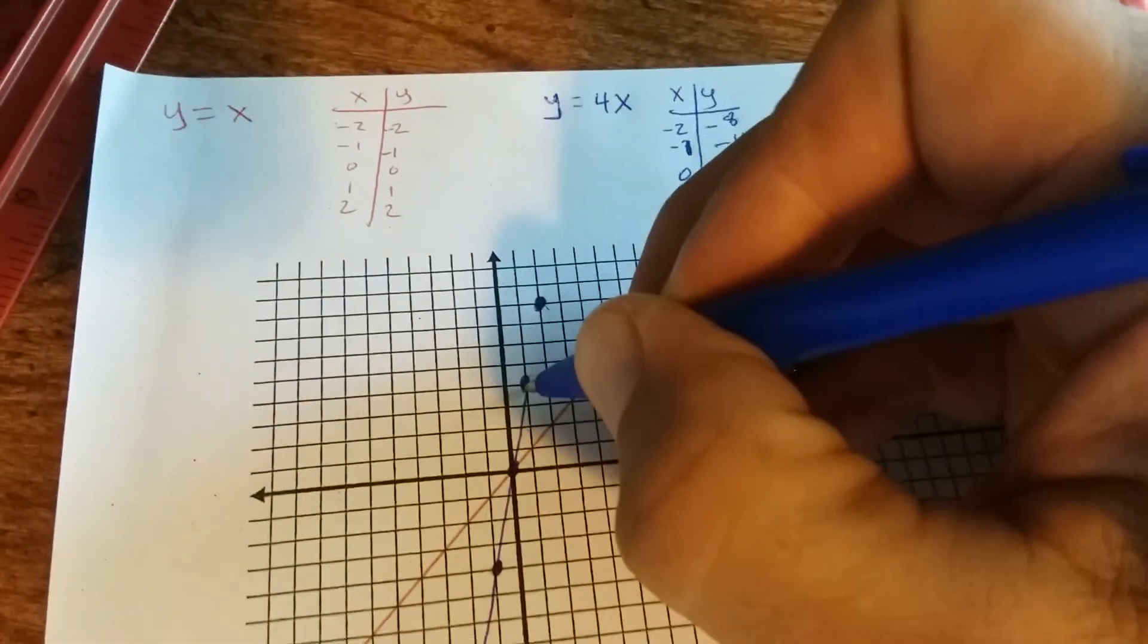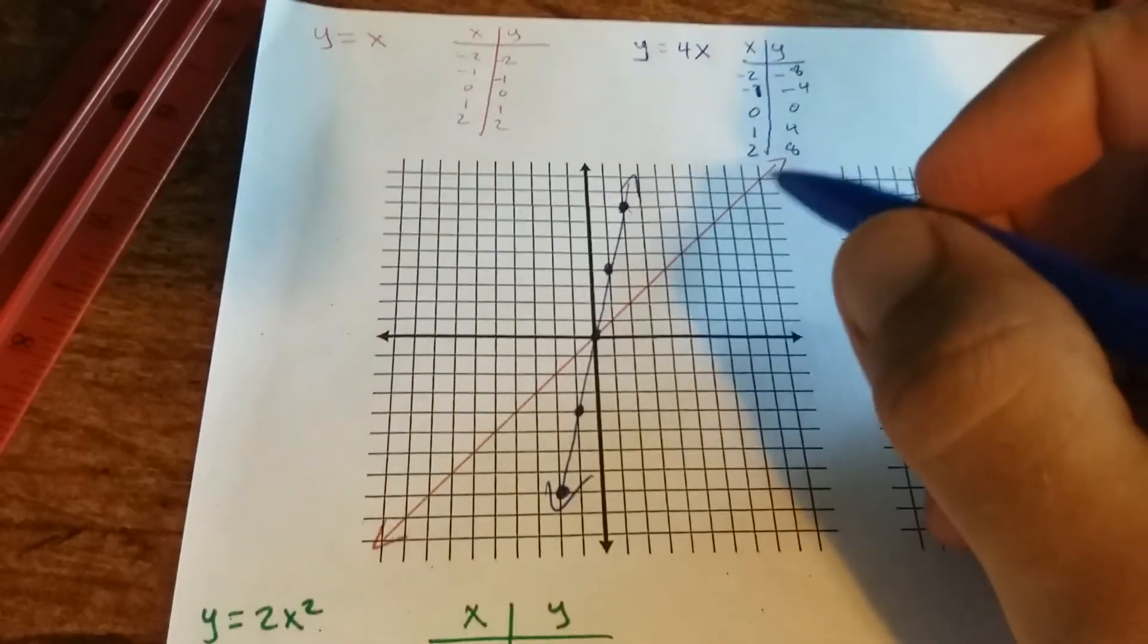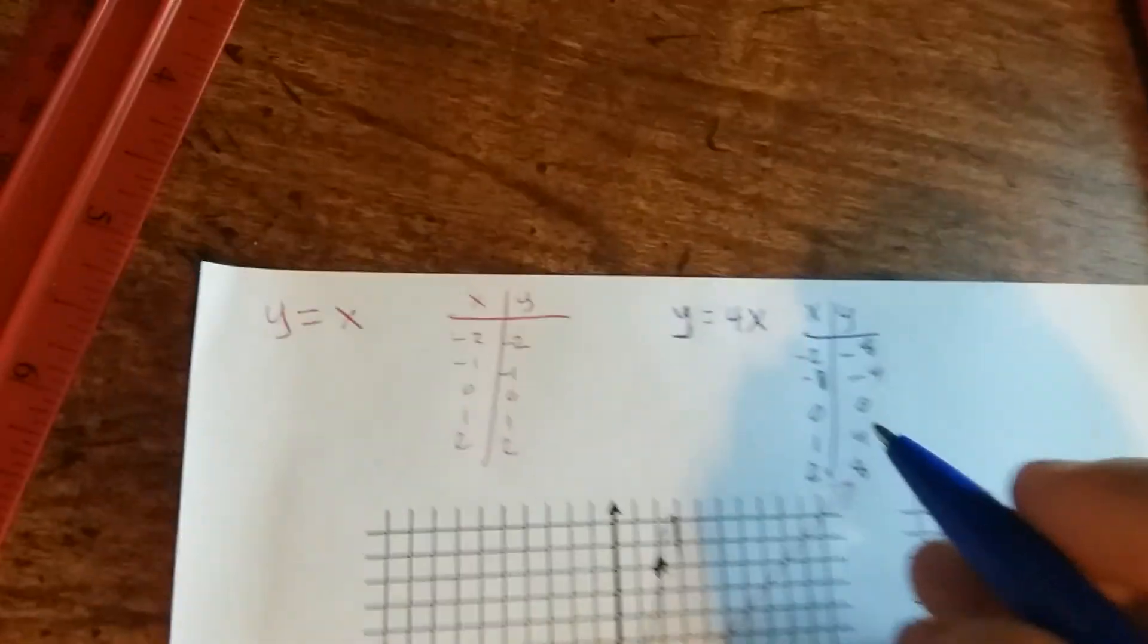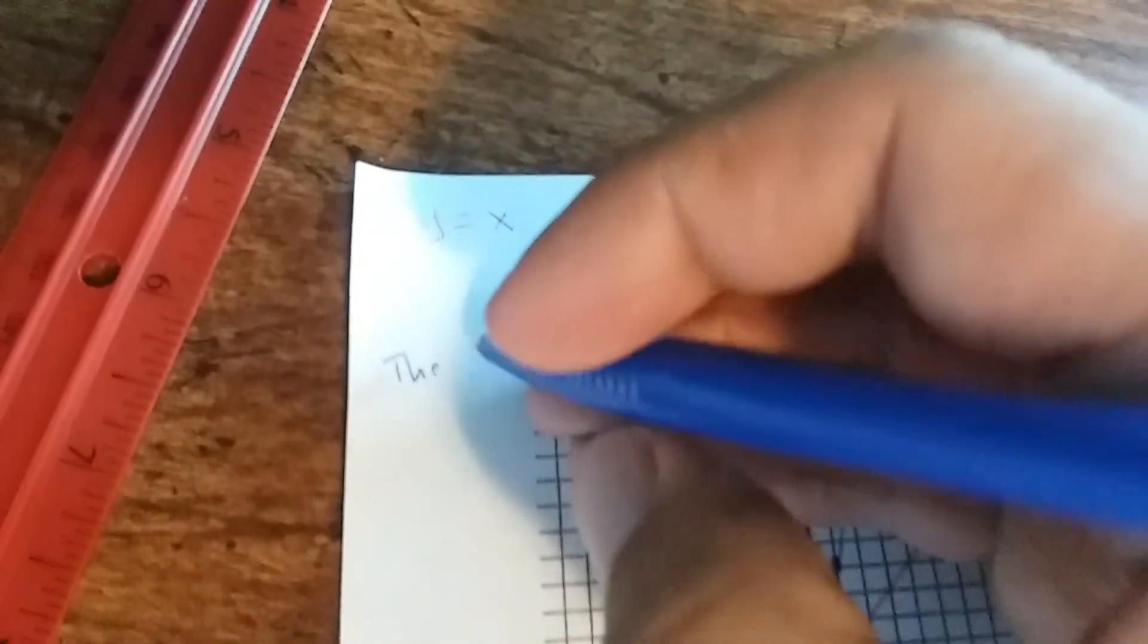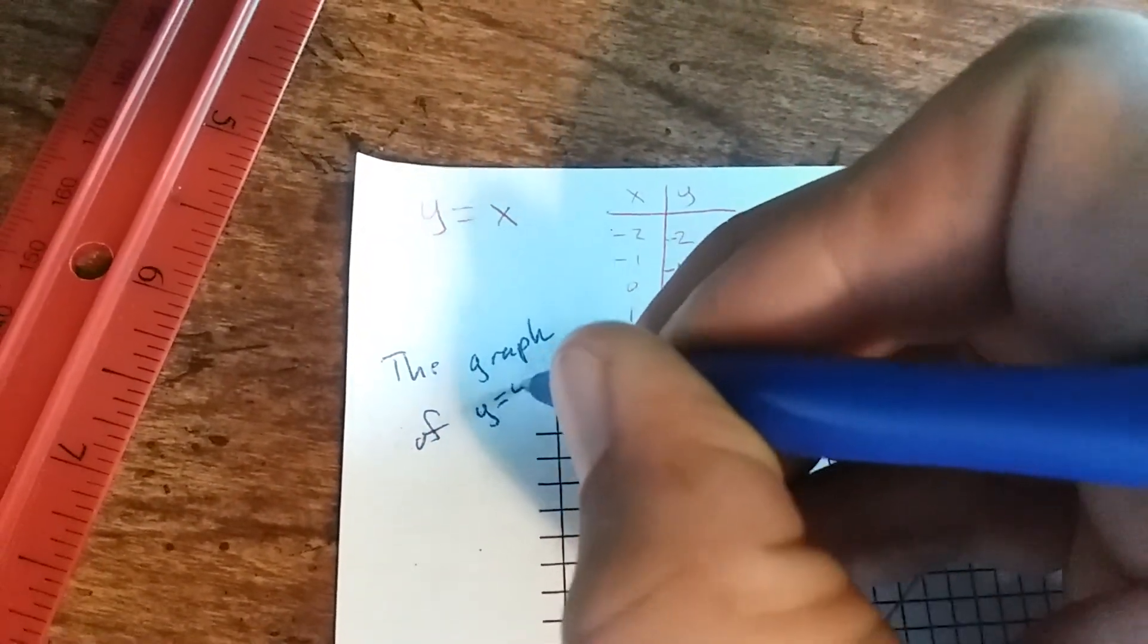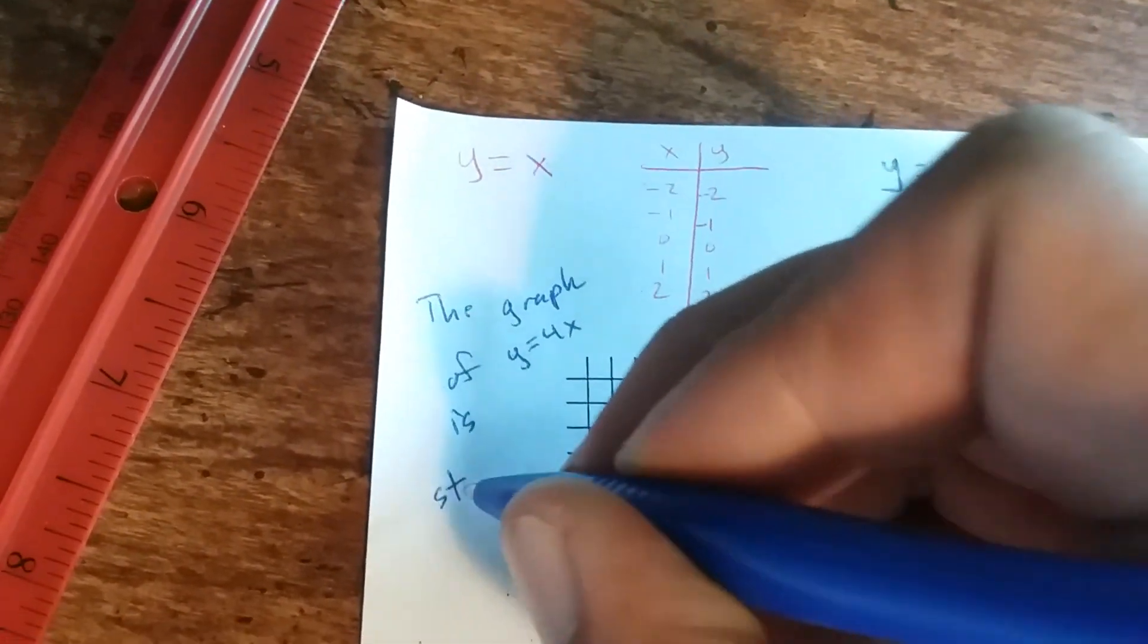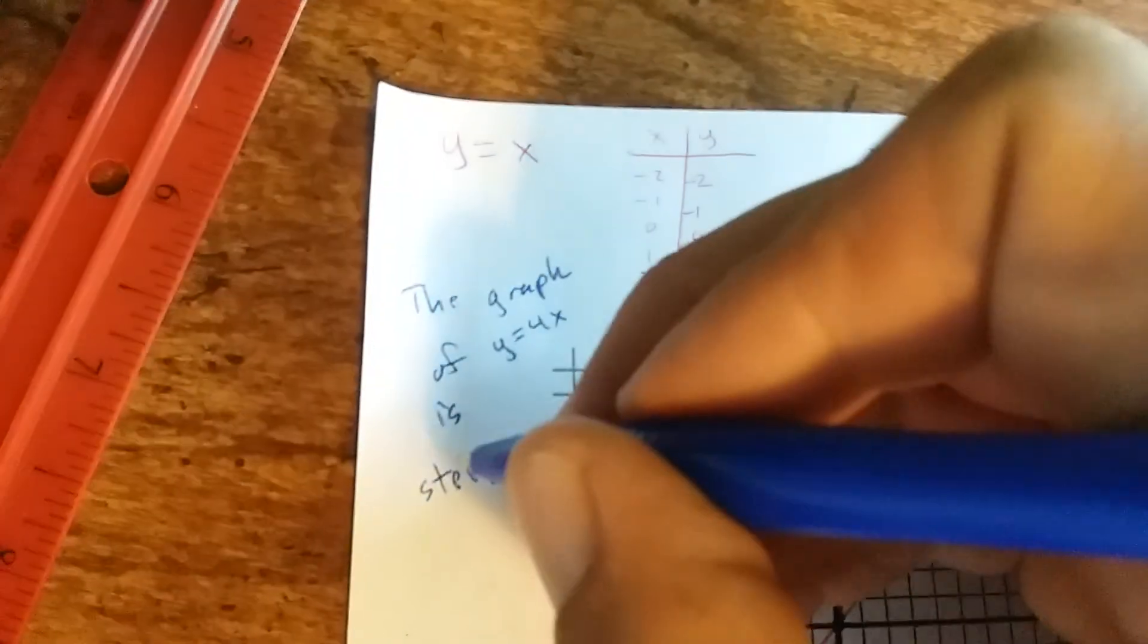So if we look, the graph of y equals 4x is steeper. So you have to explain how the graph is affected. The graph of y equals 4x is steeper. So if it's linear, you just tell me if it's steeper or less steep.